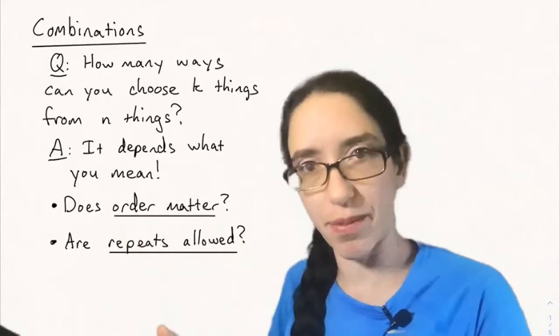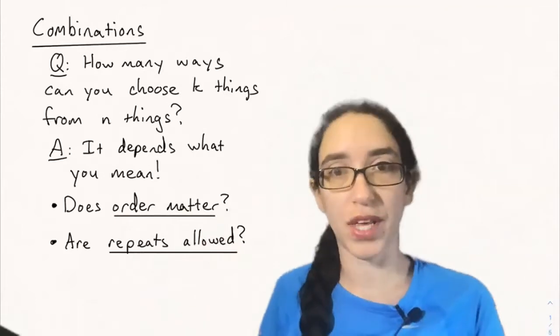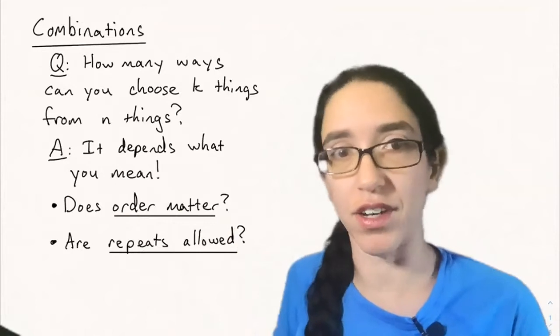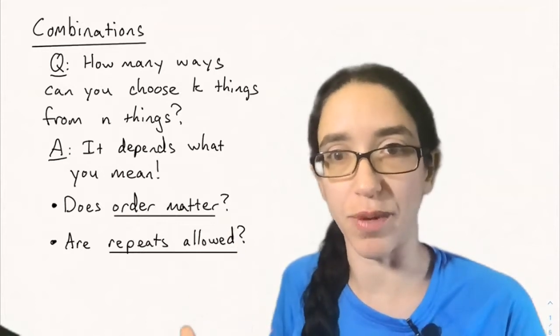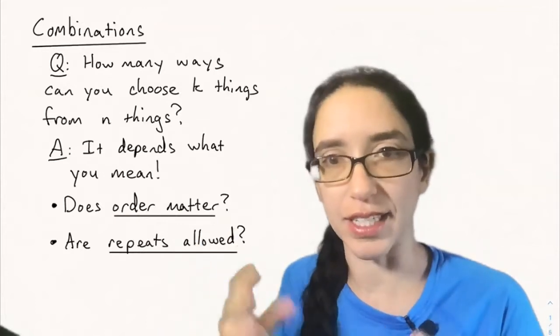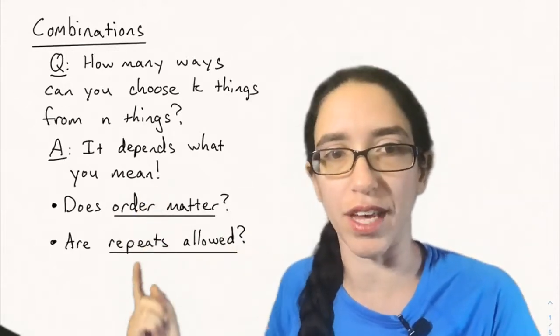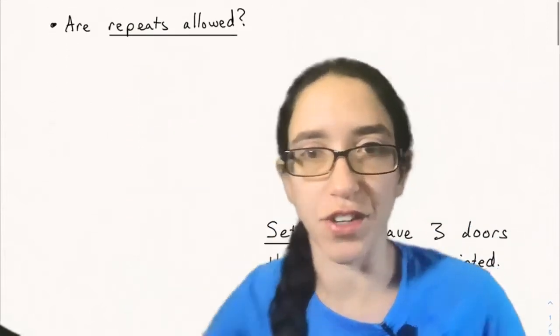Can you choose the same thing from the n things more than once? Is that allowed? Those things will change the answer to how many ways can you choose k things from n things. Today we're going to see an example using painting doors that takes into account all four possibilities of whether the answers to these questions are yes or no.